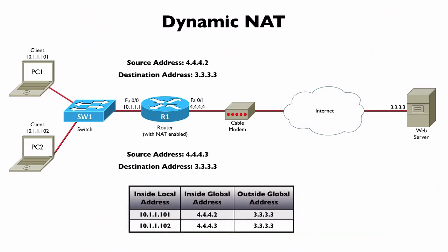Let's bring up a table to make sure we understand which addresses are inside local and which are inside global. PC1 had a private IP address of 10.1.1.101 and it was translated into 4.4.4.2 — that's an inside global address. Remember: inside means it's referencing a device inside the network, and global means it's a publicly routable IP address. For PC2, inside local 10.1.1.102 was translated into inside global 4.4.4.3. This is dynamic NAT — there's no static mapping.